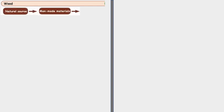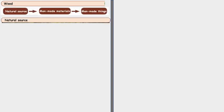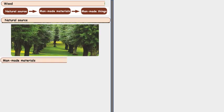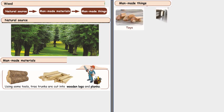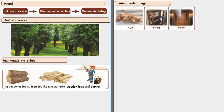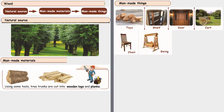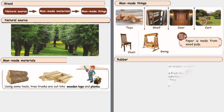Now let's discuss about wood. Wood is a natural source. From this manmade material comes and then manmade things will come. So natural source is the tree. From here manmade materials are using tools, tree trunks. The tree is cut into wooden logs and planks. Now from these wooden logs and planks manmade things like toys, shelves, door, cart, chair, swing can be made. Now paper is made from wood pulp.